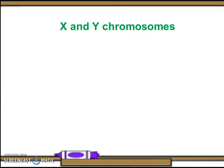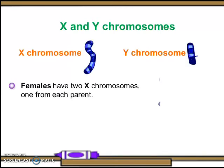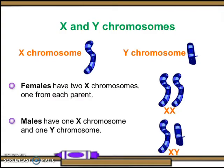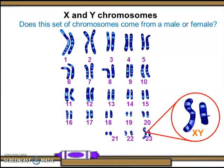There are two types of sex chromosomes: the X chromosome and the Y chromosome. Females have two X chromosomes in their cells, while males have both X and Y chromosomes in their cells. Egg cells all contain the X chromosome. This set of chromosomes comes from a male — XY chromosomes.